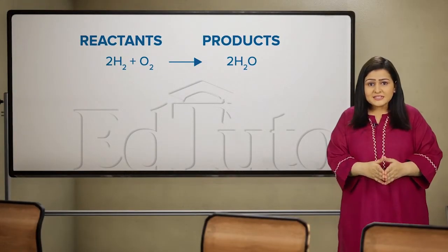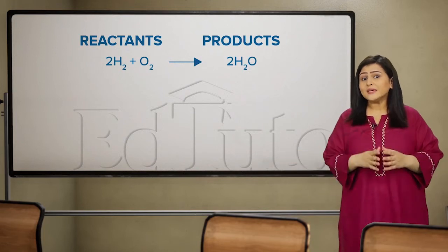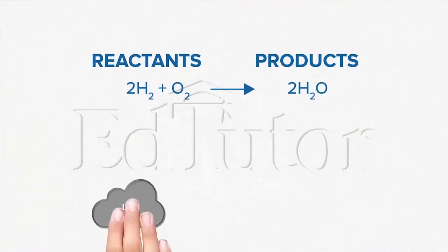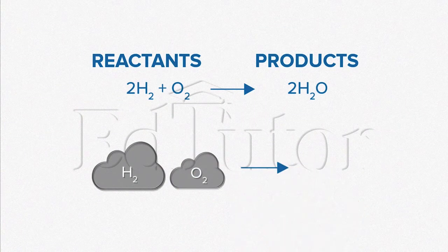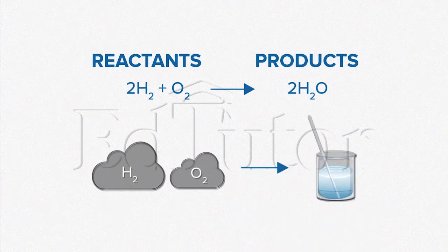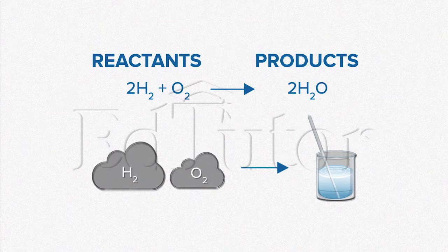If you look at here on your screen, you can see the chemical equation of a reaction between hydrogen and oxygen. These react to form water. In this example, hydrogen and oxygen are reactants, and water is a product.